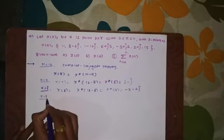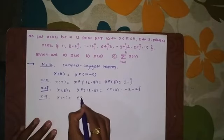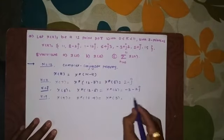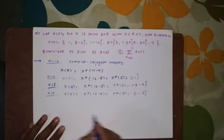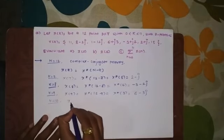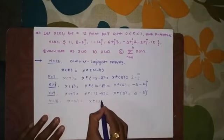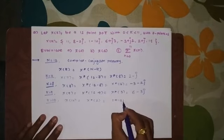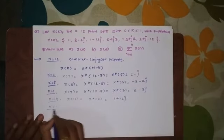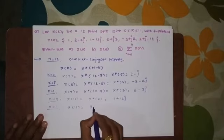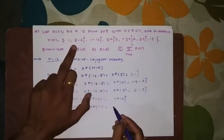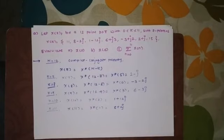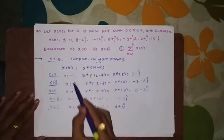For K equal to 9, X9 equals X complex conjugate of 12 minus 9, which is X complex conjugate of 3. X3 is 6 plus 3J, so X9 becomes 6 minus 3J. For K equal to 10, X10 is X complex conjugate of 2, which gives 1 plus 12J. For K equal to 11, X11 is X complex conjugate of 12 minus 11, which is X complex conjugate of 1. X1 is 8 minus 2J, so X11 becomes 8 plus 2J. These are the terms X7 through X11 that we have determined.